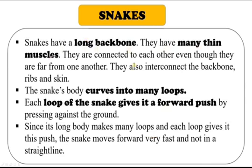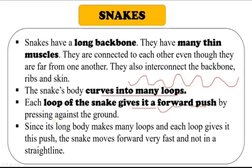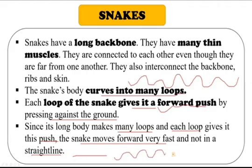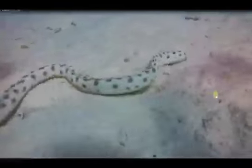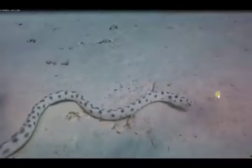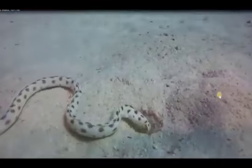Snakes have a long backbone and many thin muscles connected to each other, to the backbone, ribs, and skin. The snake's body curves into many loops, and each loop gives it a forward push by pressing against the ground. Snakes cannot move in a straight line — their long body makes many loops and each loop provides a push, producing a zigzag movement forward.